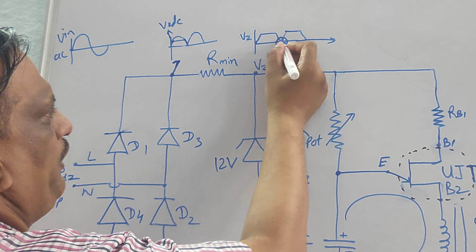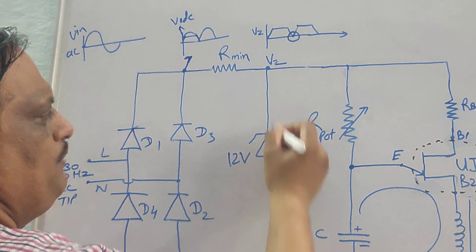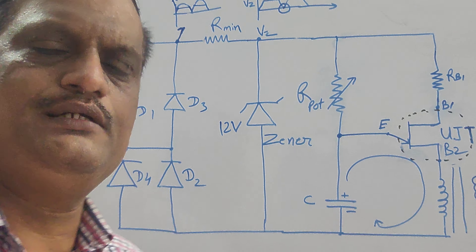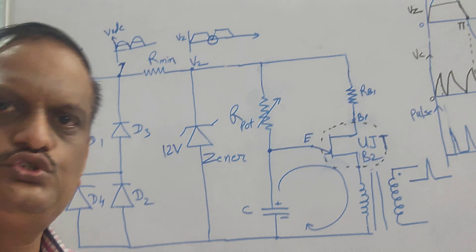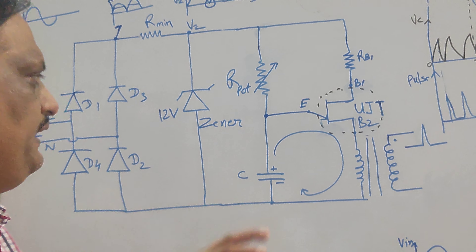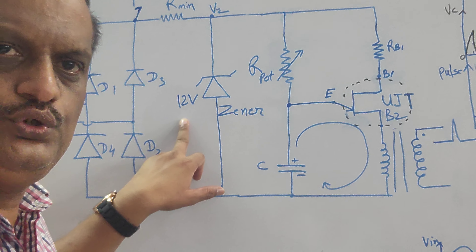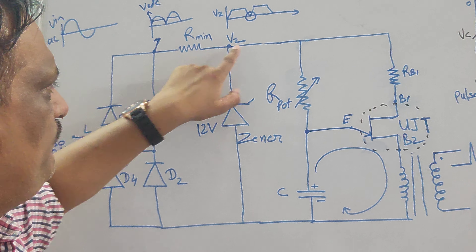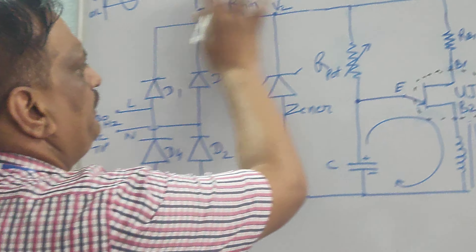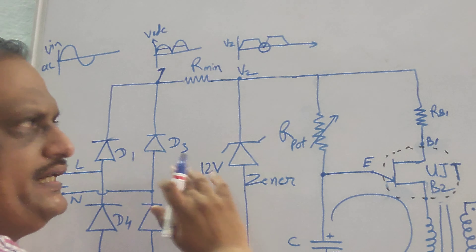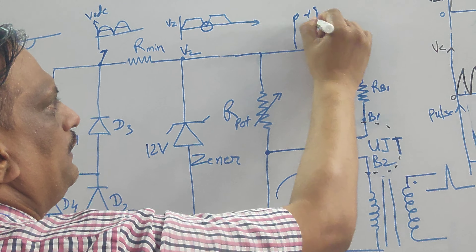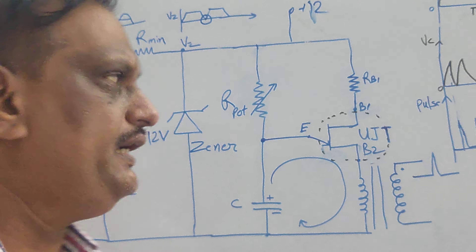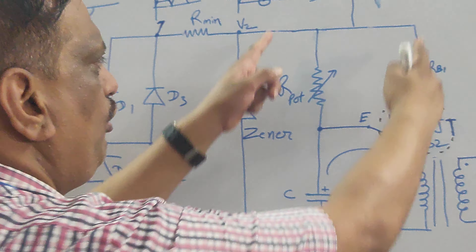This is the half cycle for which the Zener voltage will remain constant. For the next half cycle again, the Zener diode comes into conduction at 12 volts and remains constant at 12 volts. It is similar to studying the Zener diode as a regulator — the Zener diode conducts only when it achieves the Zener voltage, and that 12 volts VZ will appear at this point. You could eliminate this circuit and directly connect plus 12 volts, but in that case synchronization is not possible. To achieve synchronization, this circuit is built along with the UJT triggering circuit.